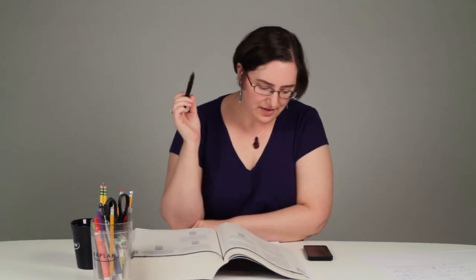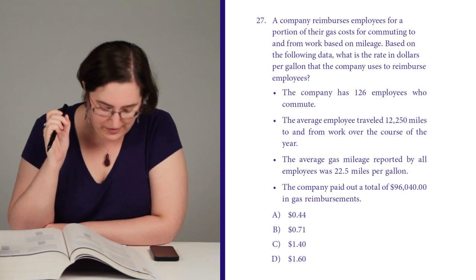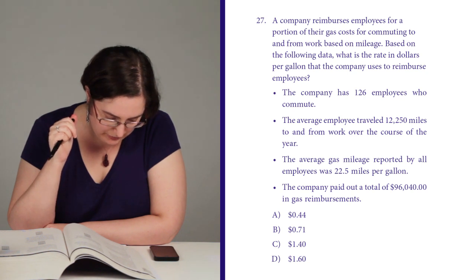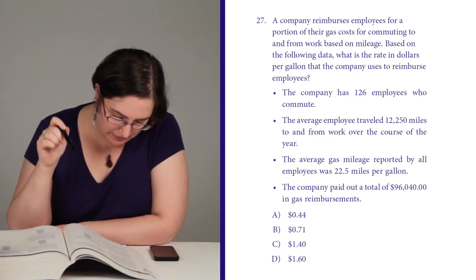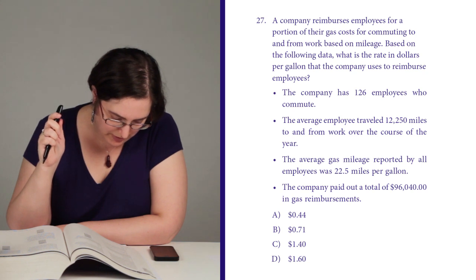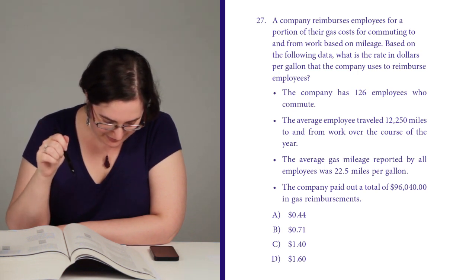Next up, we've got page 122, question number 27. A company reimburses employees for a portion of their gas costs for commuting to and from work based on mileage. What is the rate in dollars per gallon that the company uses to reimburse employees? Bullet points: 126 employees who commute; average employee traveled 12,250 miles to and from work over the course of the year; average gas mileage was 22.5 miles per gallon; and the company paid out a total of $96,040 in gas reimbursements.